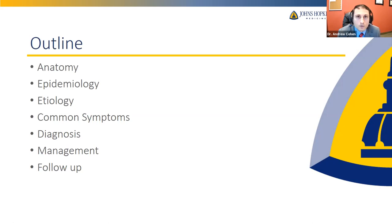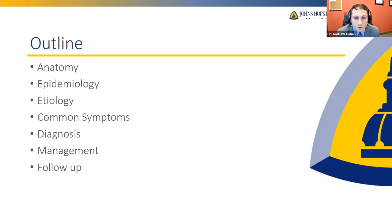First, we're going to review the anatomy of the urinary system. We're going to talk about how often these problems happen and where — that's the epidemiology. Then we'll talk about what may cause these problems — the etiology. We'll discuss common symptoms, how a doctor would confirm the diagnosis, what one would do about it, and what the follow-up plan and surveillance looks like after treatment.